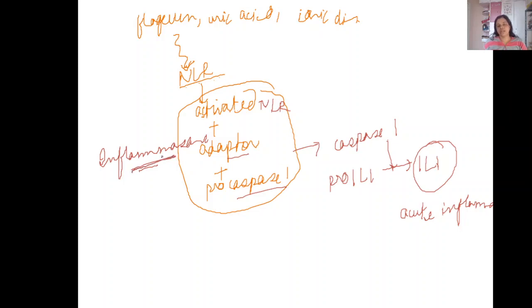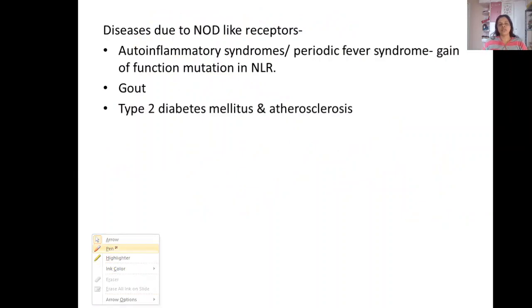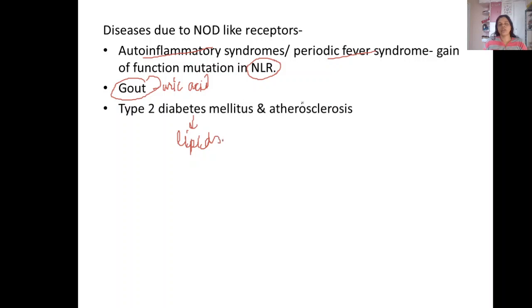There are some diseases which can be caused by this NOD-like receptor. These are auto-inflammatory syndromes or the periodic fever syndromes which are caused due to gain of function mutation in the NOD-like receptor. When uric acid is detected by these NOD-like receptors, it leads to gout. Type 2 diabetes develops when these receptors recognize the lipids, and atherosclerosis is caused when they recognize the cholesterol.